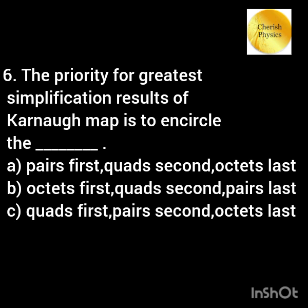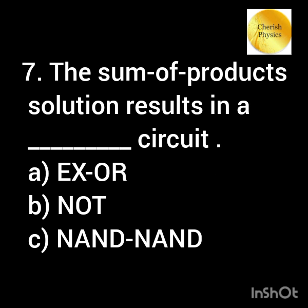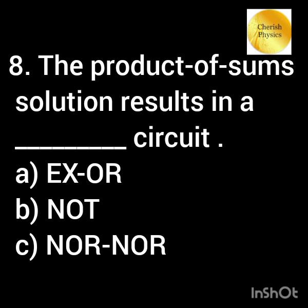The priority for greatest simplification results of a Karnaugh map is to encircle the largest groups first. The sum of product solution results in a NAND circuit. The product of sum solution results in a NOR circuit.